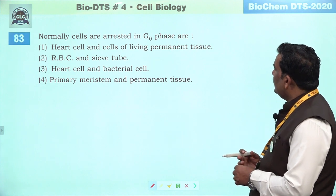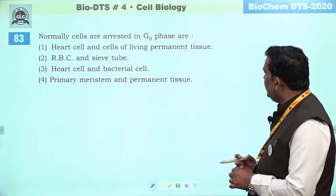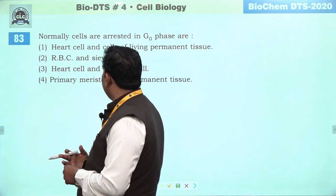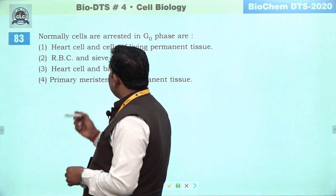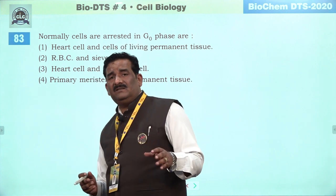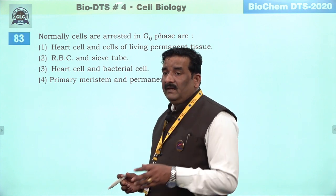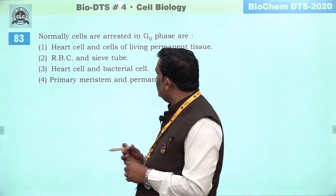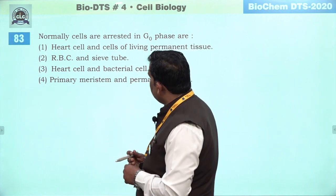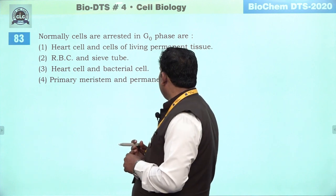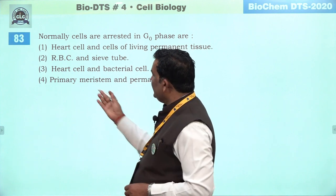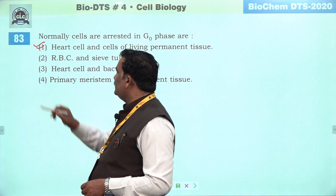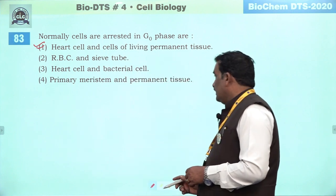Next question: normally cells are arrested in G0 phase — isi saal NEET ka question tha. Achha hai — G0 par hamesha questions NEET mein puchhe ja rahe hain. Heart cells rehti hain — permanent cells are also arrested in G0 phase, and they may activate on requirement during secondary meristem formation. RBC mein nucleus hai hi nahi. Bacteria mein nucleus nahi hai, nucleoid hai. Primary meristem ka G0 par arrested nahi honge. First is the better option.